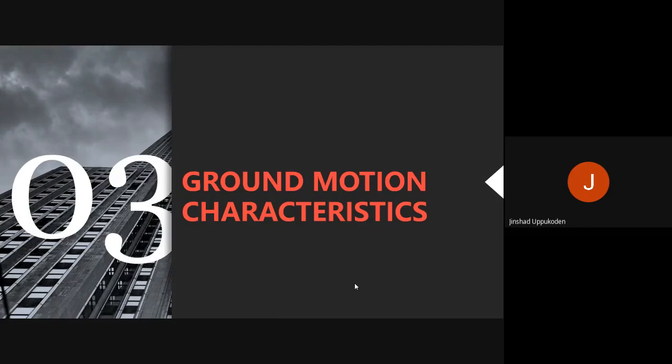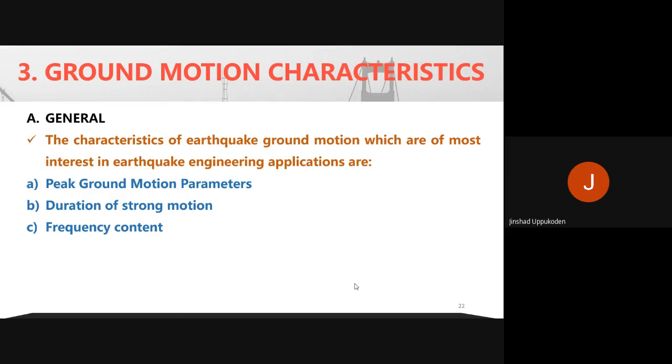We have studied the factors that affect ground motion. Now we shall look into the strong ground motion characteristics — because as earthquake engineers, we are concerned only with strong motion. The three characteristics of most interest to earthquake engineers are: peak ground motion, duration of strong motion, and frequency content.